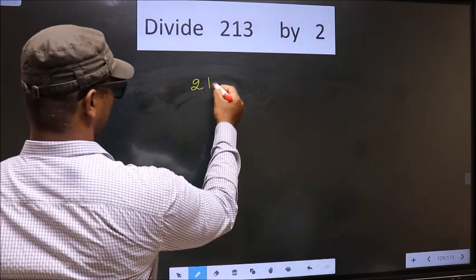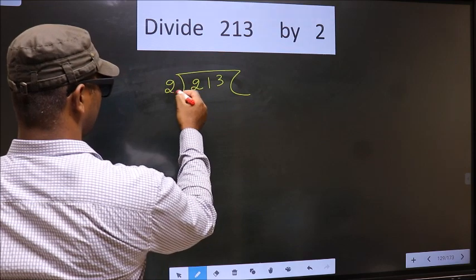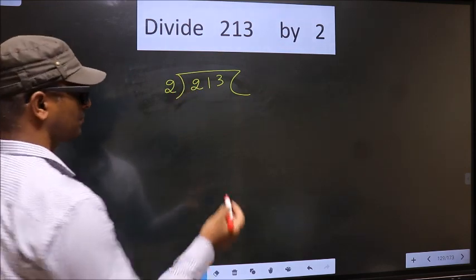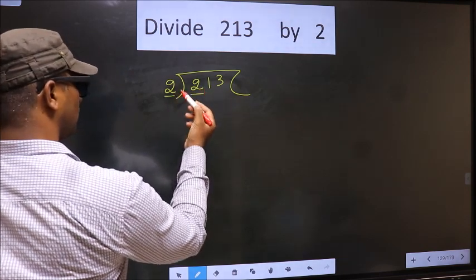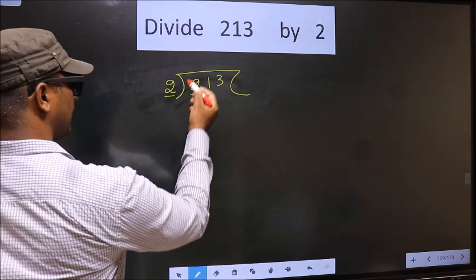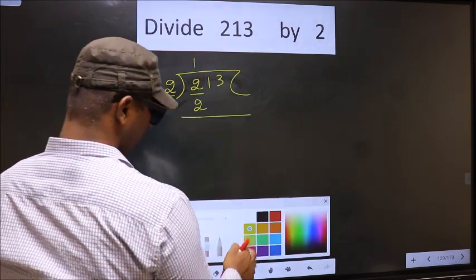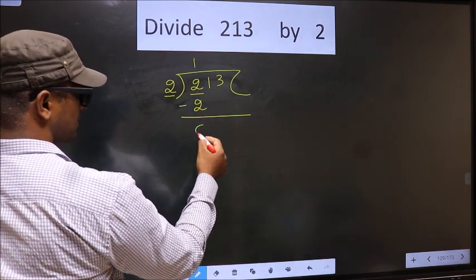That is 213, 2 here. Now here we have 2, here also 2. When do we get 2 in the 2 table? 2 once, 2. Now you subtract. 2 minus 2, 0.